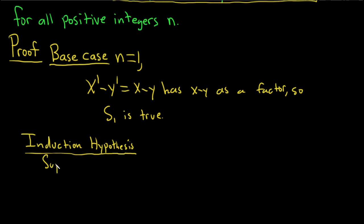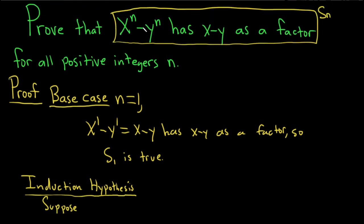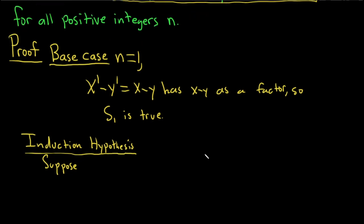And basically we're just going to plug in k here. x to the k minus y to the k. Suppose x to the k minus y to the k has x minus y as a factor.